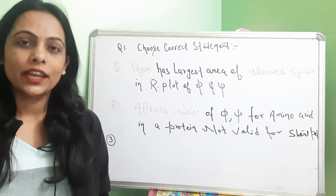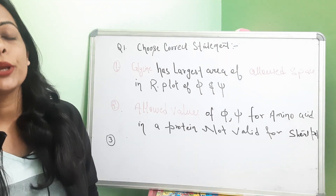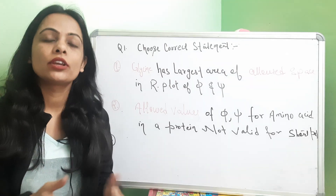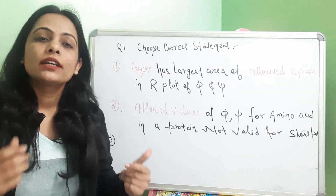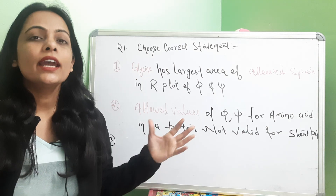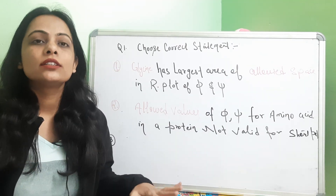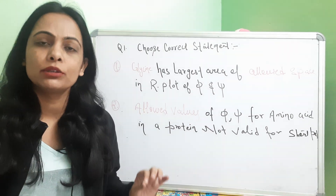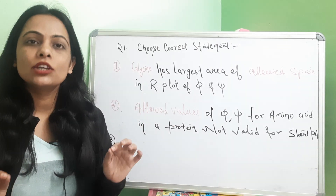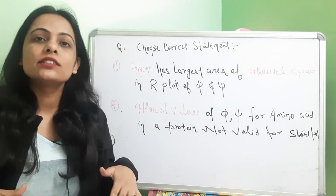Welcome back to my video lectures. Today we will discuss previous year questions based on the CSIR NET examination about the Ramachandran plot. We already discussed this topic in a previous video — what is plotted in the Ramachandran plot, what phi and psi values are, and what dihedral angles are. In this lecture, we will only solve the PYQs from the CSIR NET examination. Please watch that video before this one; the link is in the description box.